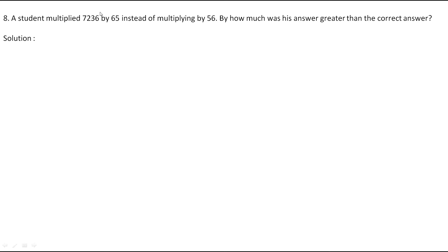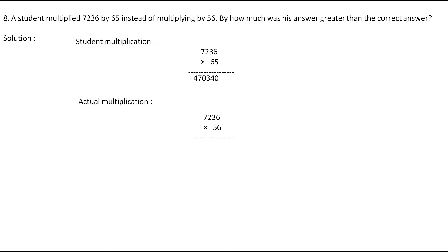First we will do the student's multiplication: 7,236 multiplied by 65 gives the answer as 4,70,340. Now let's do the actual multiplication: 7,236 multiplied by 56 gives the answer as 4,05,216. Now they are asking us by how much was his answer greater than the correct answer, so for that we have to do subtraction.